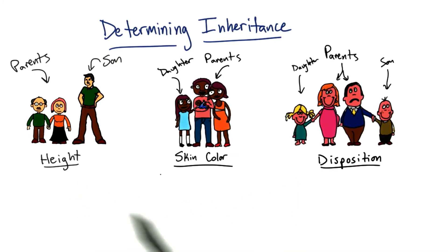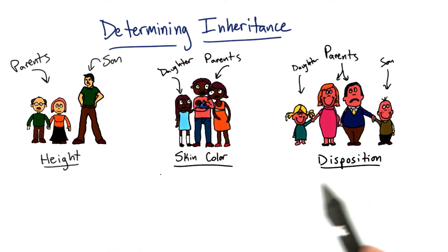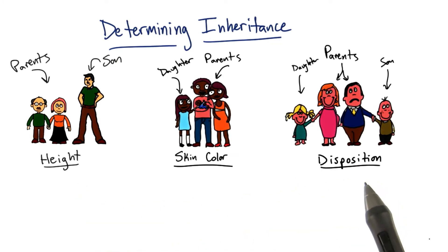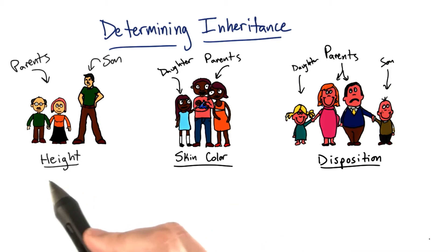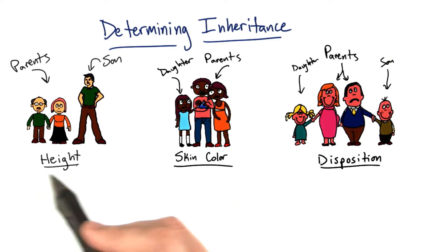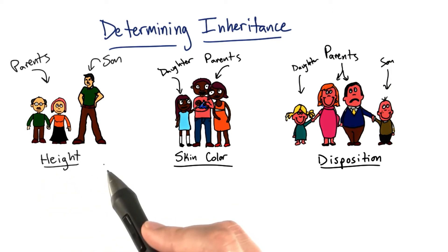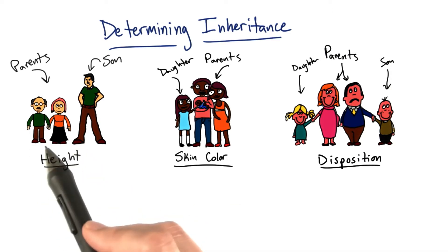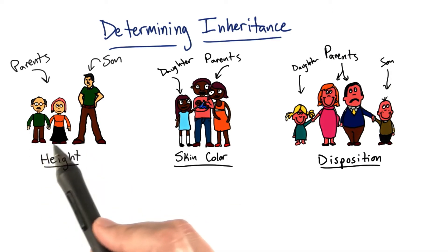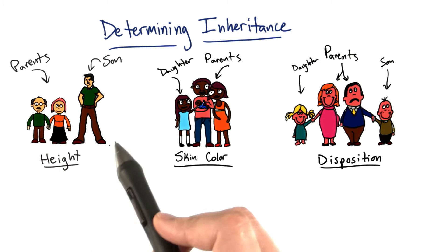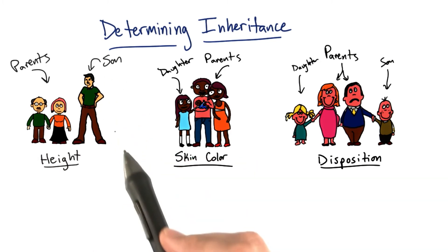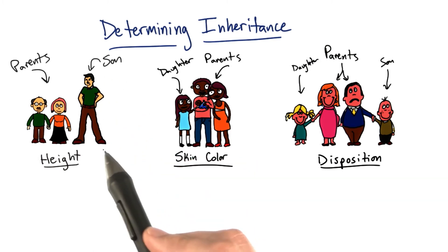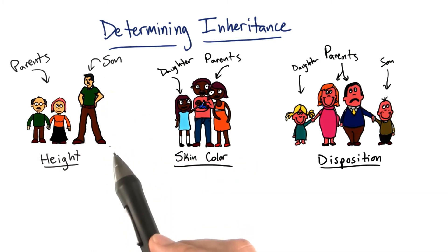Take these three examples of families with different traits. For example, look at height in the first scenario. We have two parents who are relatively short, who have a son that's taller than both of them — much taller, in fact.